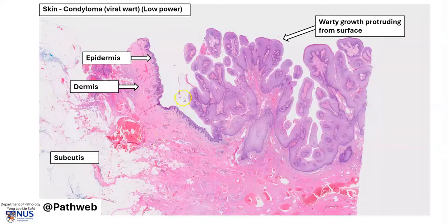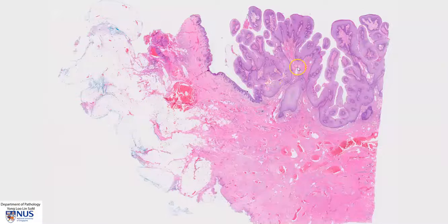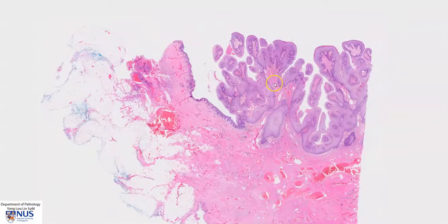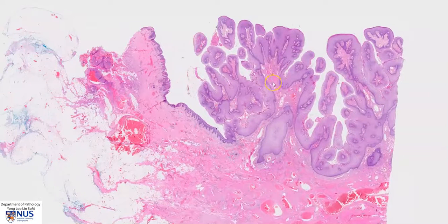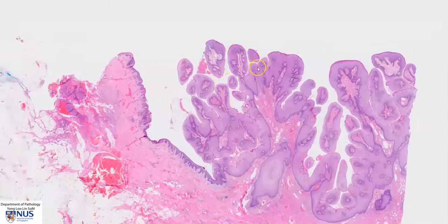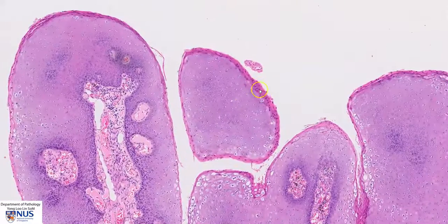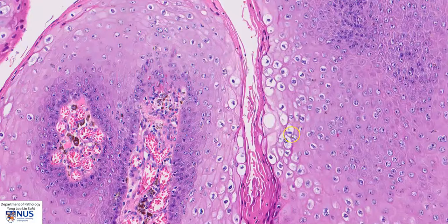Here are some examples of annotated microscopic pictures, which can be found in our free online resource PATH web — the registration link is in the video description and you can register for free. In summary, this is a condyloma or viral wart occurring in the skin and anal-genital region. Microscopically there is papillomatosis, acanthosis, parakeratosis or hyperkeratosis, and koilocytic atypia. Condylomas are benign lesions associated with HPV infection.